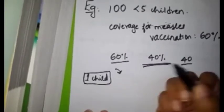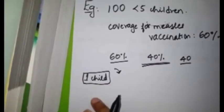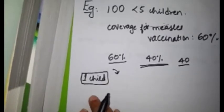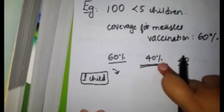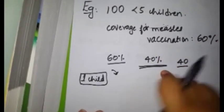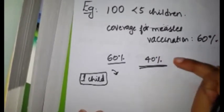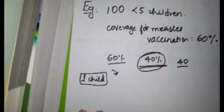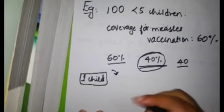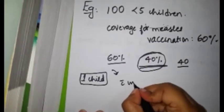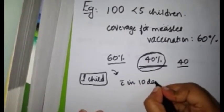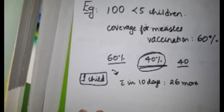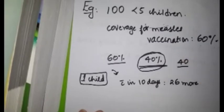Next, what happens? One child develops measles. Which percent of the population do you think this child belongs to? Obviously the susceptible population, or the group which did not receive vaccination. So one child from this 40% group developed measles.